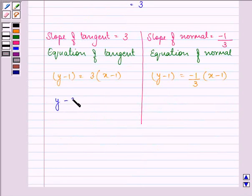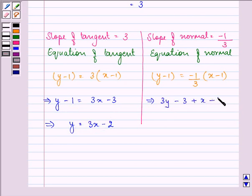y minus 1 equals 3x minus 3, which can be further written as y equals 3x minus 3 plus 1, which is minus 2. Here we have 3y minus 3 plus x minus 1 equals 0, which further gives us x plus 3y minus 4 equals 0. So the answer to this part is,